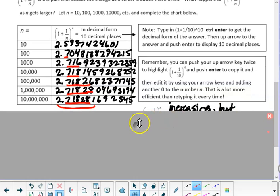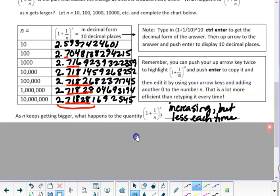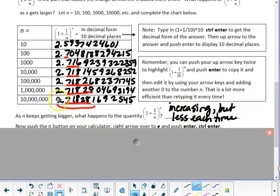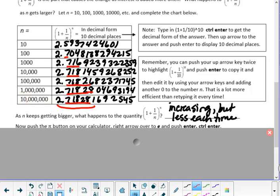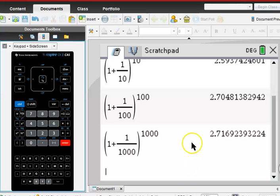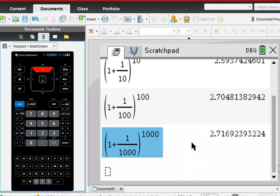You might recognize this number. And once again, we see that it's increasing, but just by a slighter and slighter amount each time. This number actually, this expression, if we make n go to infinity, actually turns into a number.